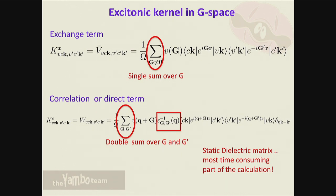Now let me show how the matrix elements appear as programmed in Yambo. The exchange kernel, when Fourier transformed, appears as a single sum in G-space over the Coulomb potential and what we call the oscillator - probably called rho by Daniele. The correlation (direct) part has a sum over two G indices, G and G', because the screened Coulomb potential W enters here. This makes the direct part much more computationally expensive than the exchange part, similar to the GW case.